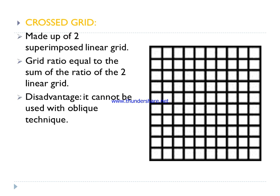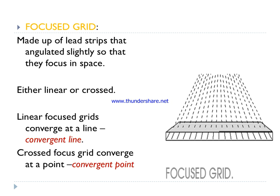In a cross grid, lead strips are superimposed on each other — present in both vertical and horizontal sections. They are superimposed, which is also described as a linear grid superimposed on another linear grid. The grid ratio of a cross grid equals the sum of the ratios of the two linear grids. Cross grids cannot be used with oblique techniques.